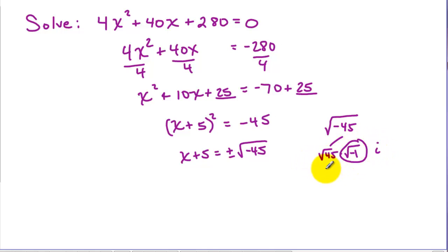And again, this is divisible by a perfect square, 9 and 5. So we're going to get 3i radical 5, plus or minus 3i radical 5. Subtract our 5 to the other side and we have our complex conjugate pair as our answers.